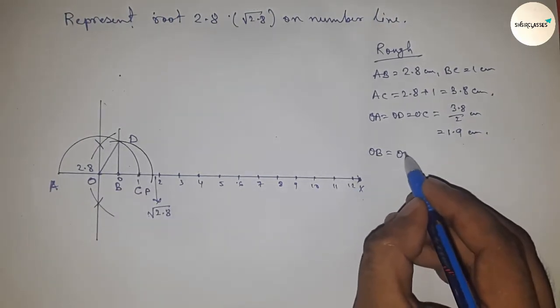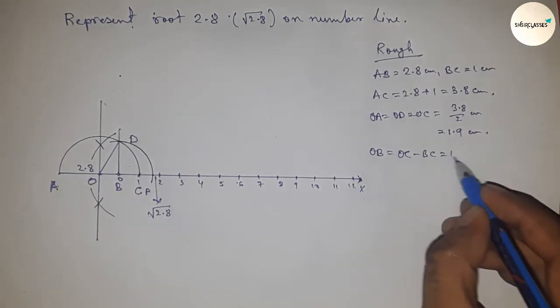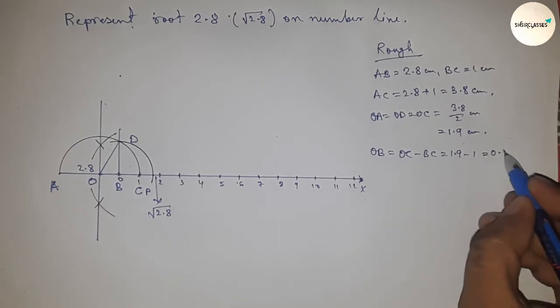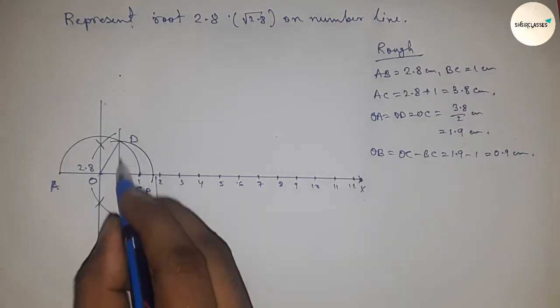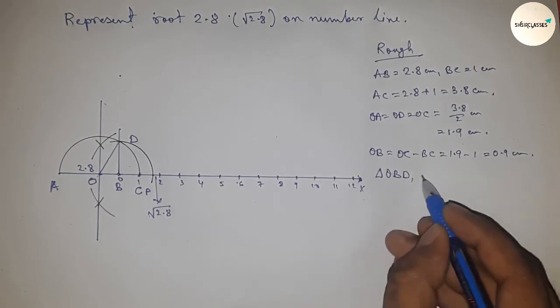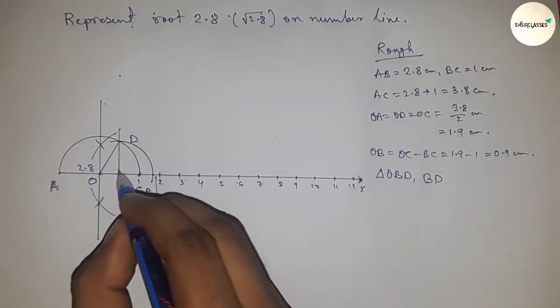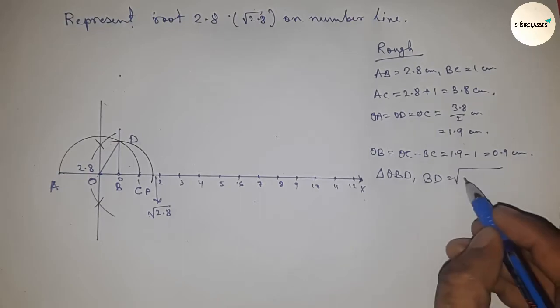In right angle triangle OBD, by Pythagoras theorem, BD = √(hypotenuse² - base²). Putting the values: BD = √(1.9² - 0.9²). Now I'll use the formula a² - b² = (a+b)(a-b).